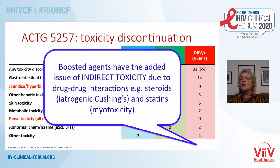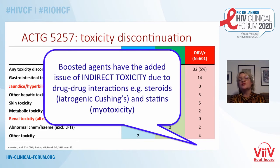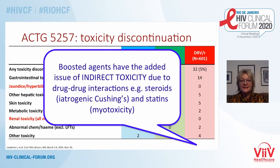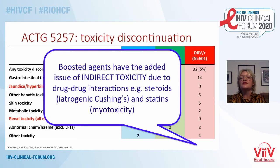Boosted drugs also have the issue of indirect toxicity because of the risk of drug-drug interactions. Two good examples are the interaction between boosters and steroids, which can lead to iatrogenic Cushing's, and with statins, which can cause myotoxicity such as rhabdomyolysis.